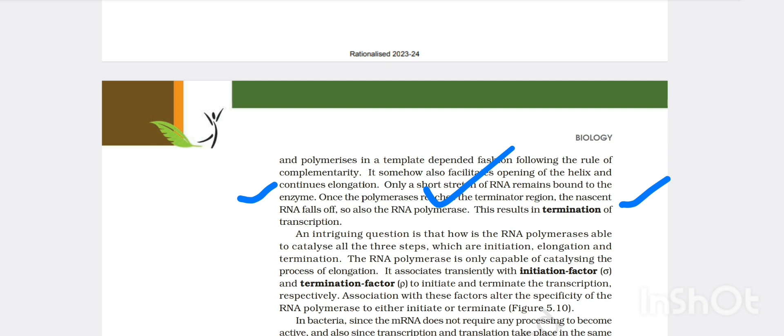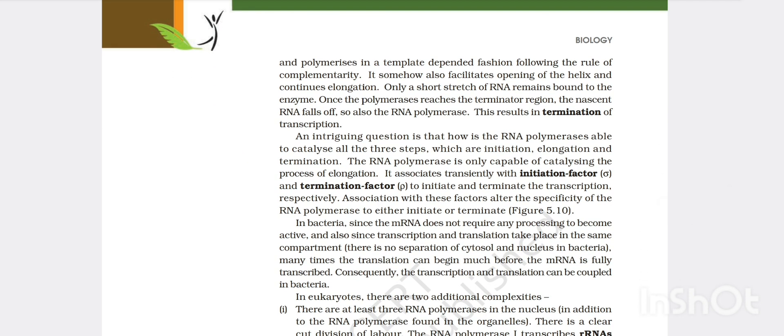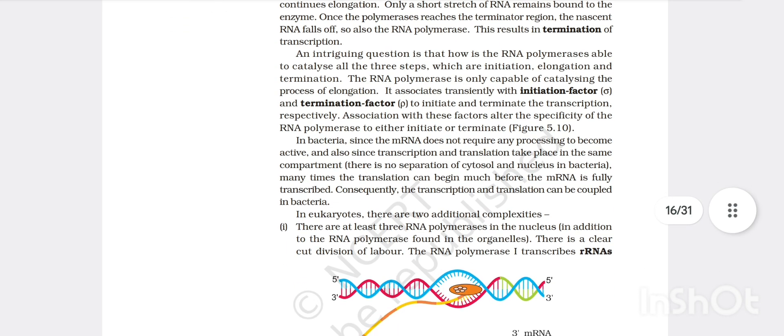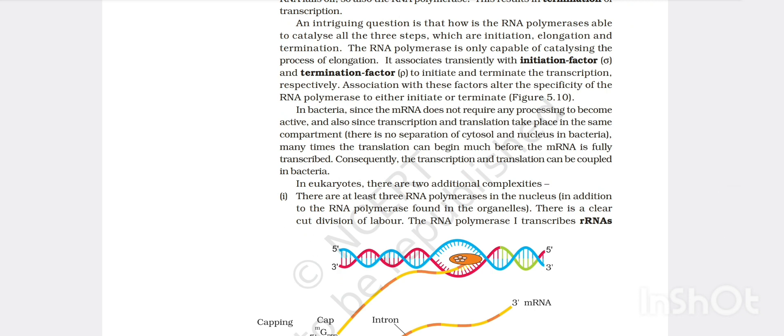RNA polymerase binds to promoter and initiates the transcription at initiation site. This process is called initiation. It uses nucleoside triphosphates as substrate and polymerizes in a template dependent fashion following the rule of complementarity. It also facilitates opening of helix and continues elongation. Only short stretch of RNA remains bound to the enzyme. Once polymerase reaches the terminal region, the nascent RNA falls off, so also RNA polymerase. This results in the termination of transcription. An intriguing question is how the RNA polymerase is able to catalyze all three steps which is initiation, elongation and termination.